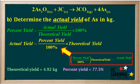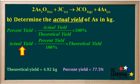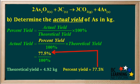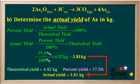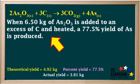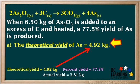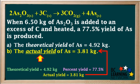We note that down here. Solving for actual yield gives us: actual yield equals percent yield over 100% times the theoretical yield. We substitute 77.5% for the percent yield and 4.92 kilograms for the theoretical yield. We cancel out the percents: 77.5 divided by 100 times 4.92 is equal to 3.81 kilograms, which is the actual yield. So to summarize: when 6.5 kilograms of As2O3 is added to an excess of carbon and heated, a 77.5% yield of arsenic is produced. The theoretical yield of this reaction is 4.92 kilograms and the actual yield is 3.81 kilograms.